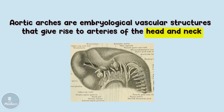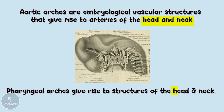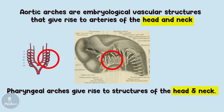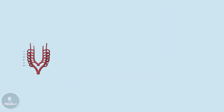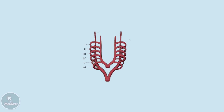If you remember from embryology, there are six pharyngeal arches which also give rise to structures of the head and neck. This is no coincidence, as each one of these pharyngeal arches is supplied by its own aortic arch. Those aortic arches will mostly be obliterated and will transform into the definitive vascular pattern that is present in adults.